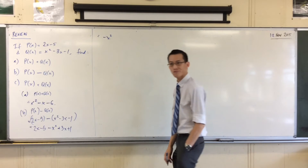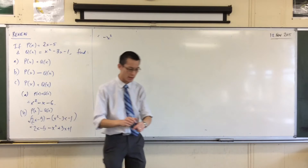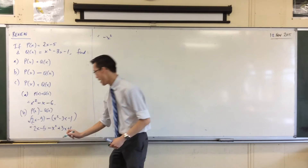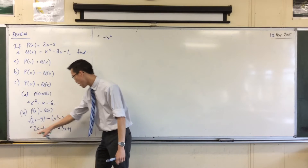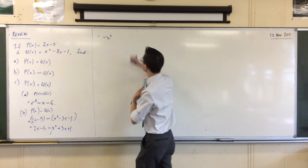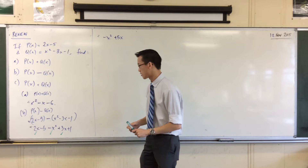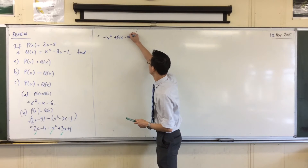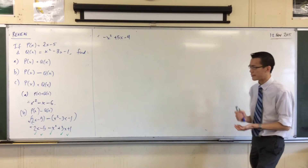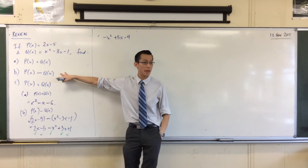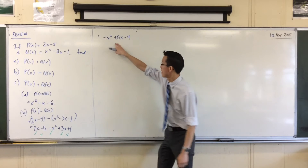How many X terms will I end up with? I've dealt with the X squareds. Sometimes when this gets harder, I get another color and tick off terms as I've dealt with them, so I don't miss any or double up on any. Look at my X terms: I've got 2 there and 3 there, so 2 plus 3 is 5. Then the constants: minus 5 plus 1 is minus 4. Everything is dealt with. As I said, if you were asked to do Q take away P, all the signs would be exactly reversed — you'd get X squared minus 5X plus 4. You can test it out if you like.